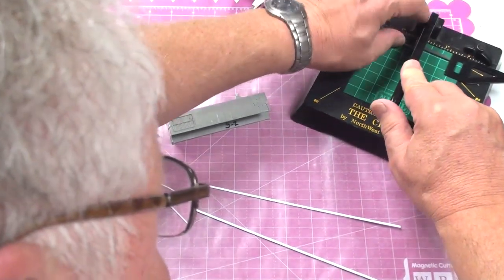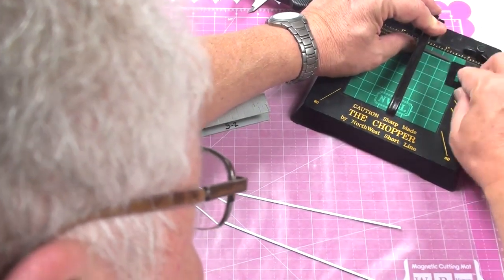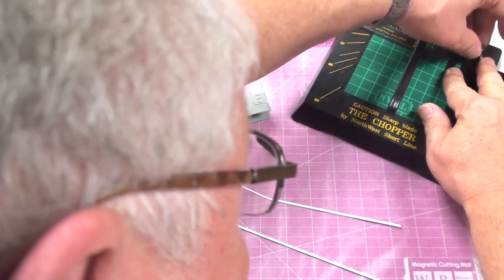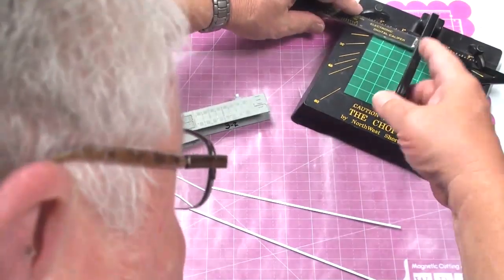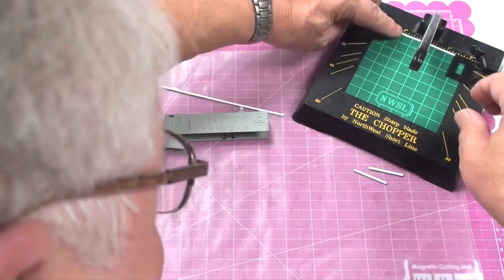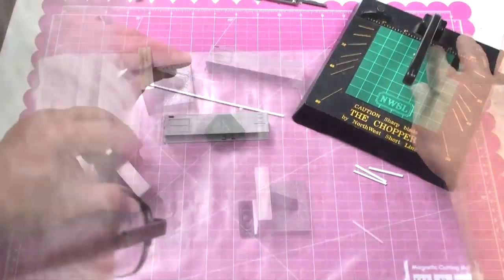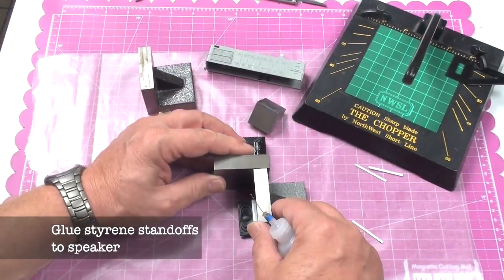Now, what I've done here is I've got a couple of different sizes of styrene. One size I'm going to use for a shim and one size I'm going to use for a riser for the speaker. But they all need to be the same length as the speaker, so we'll quickly cut those and be ready to go.